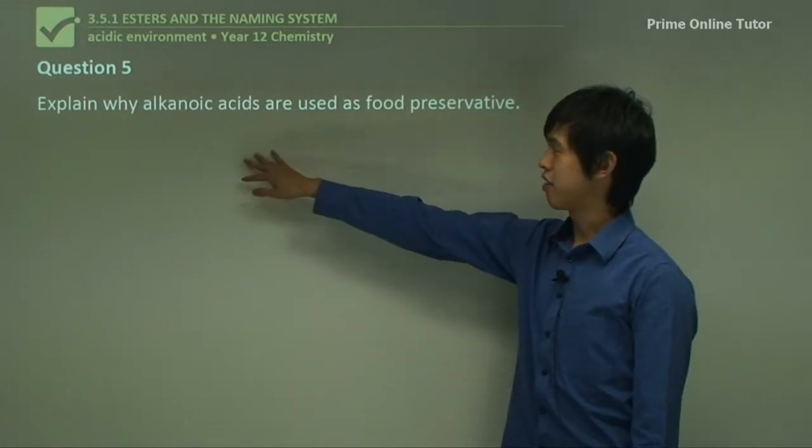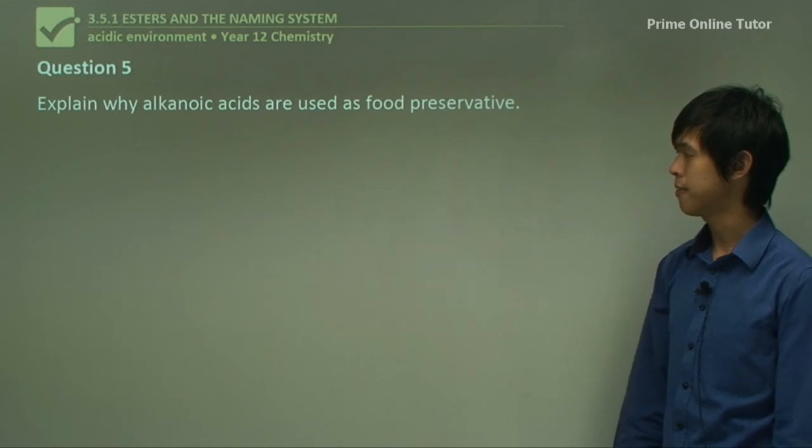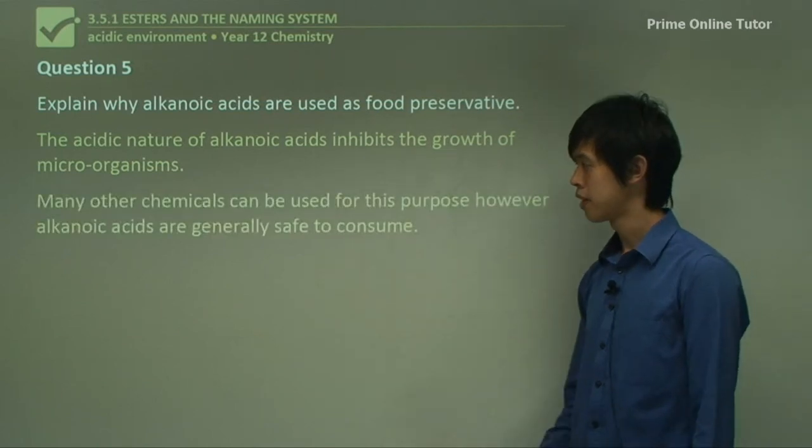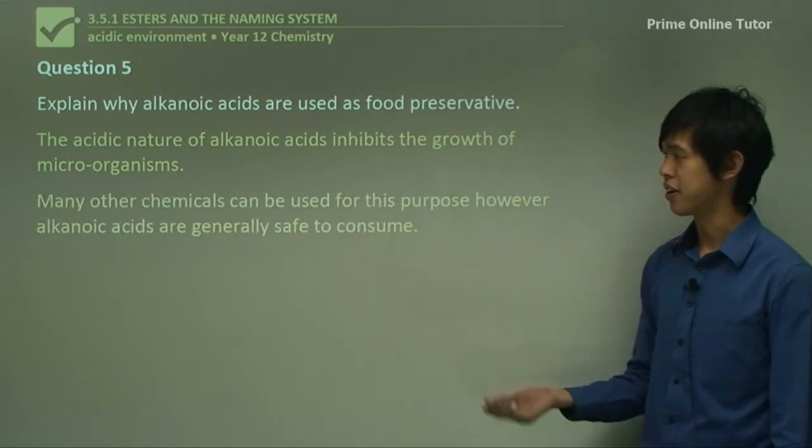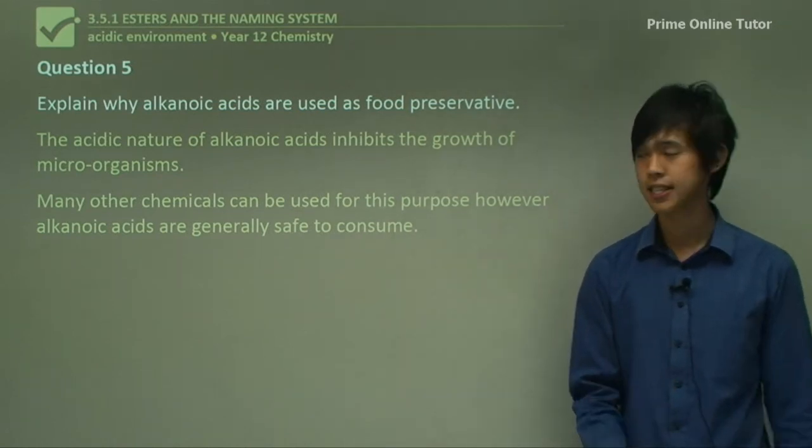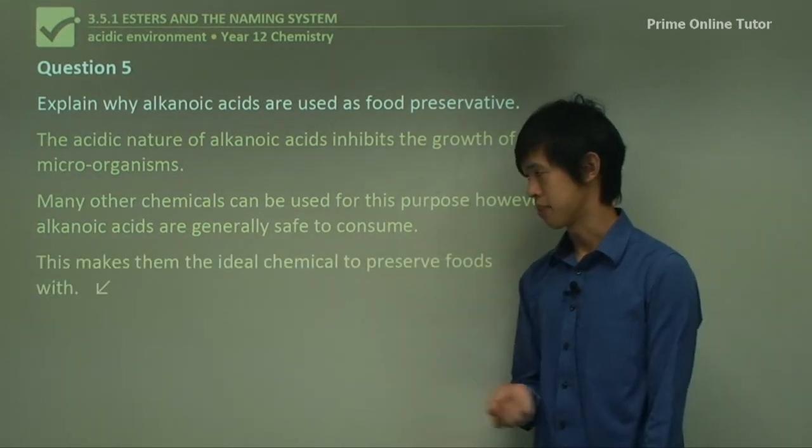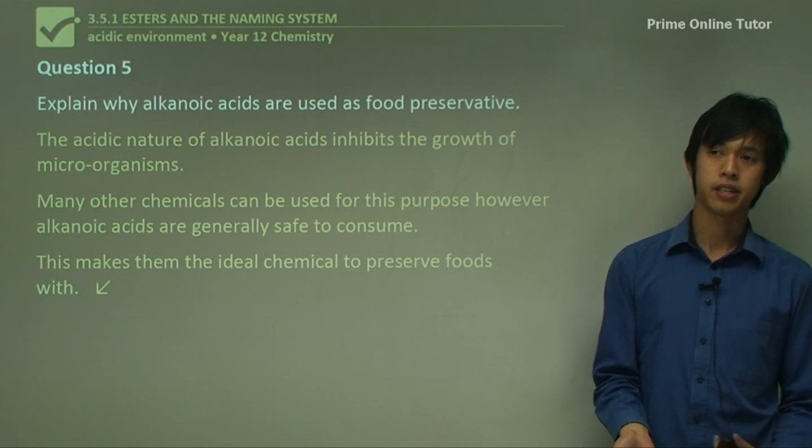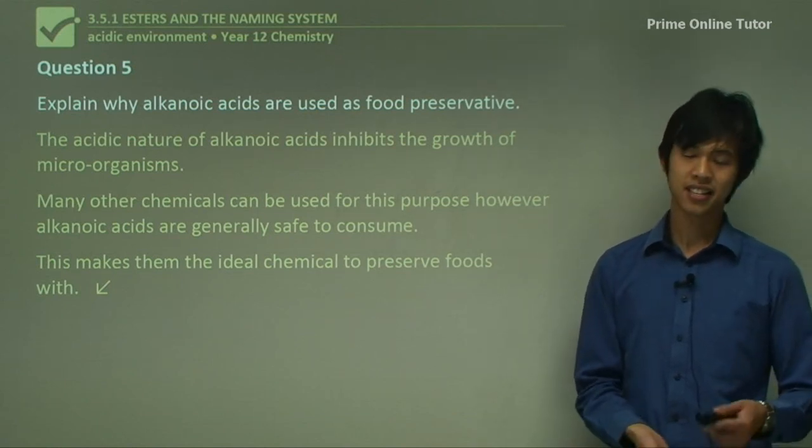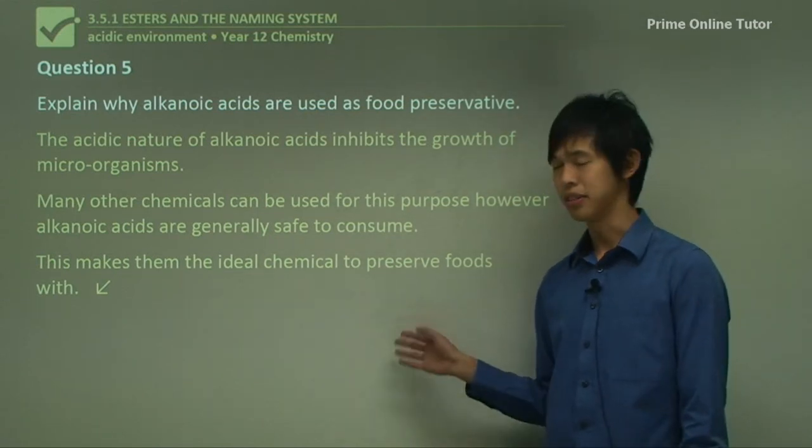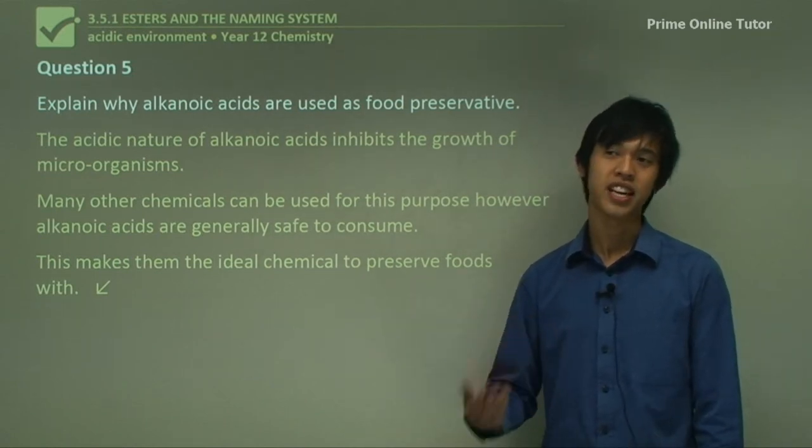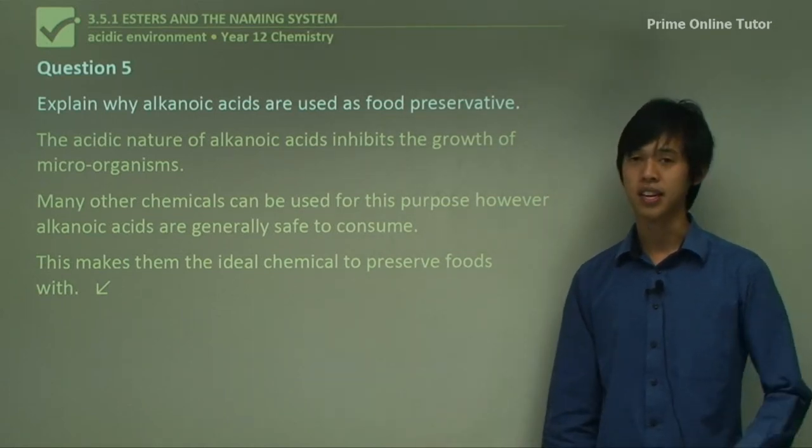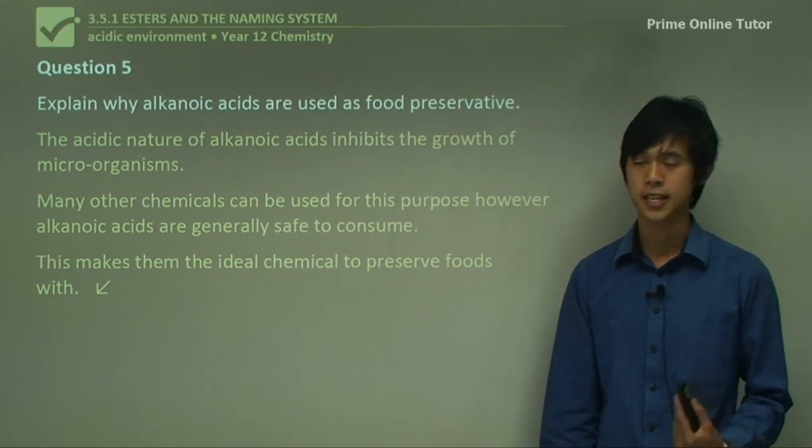Explain why alkanoic acids are used as food preservatives. Well, the acidic nature of alkanoic acids inhibits the growth of microorganisms. Many other chemicals can be used for this purpose. However, alkanoic acids are generally safe to consume because they're weak acids. This makes them the ideal chemical to preserve foods with. They're weak acids, which means we can consume them, and they also kill bacteria. They discovered this long ago, back in the old times. And that's why we've developed a taste for pickled foods, because over time people have been eating them because they know it's at least sanitary, so they can eat it and not get sick.